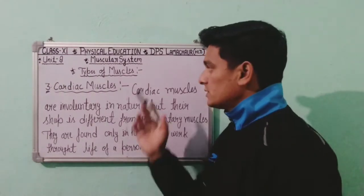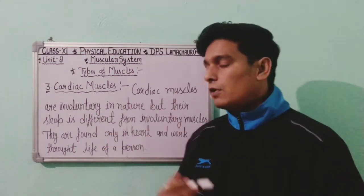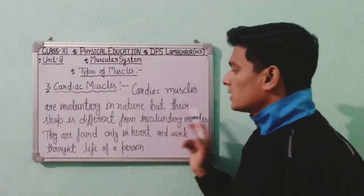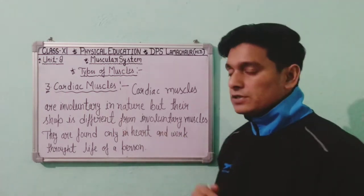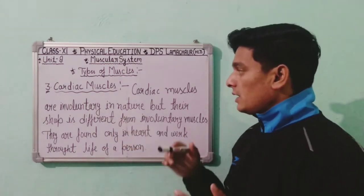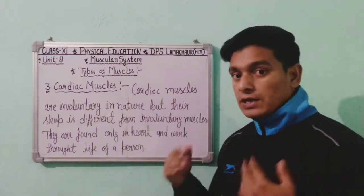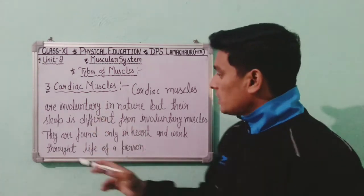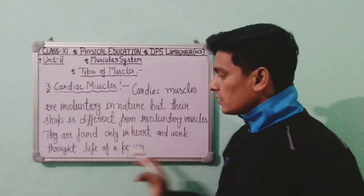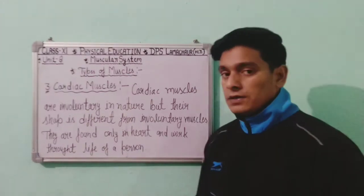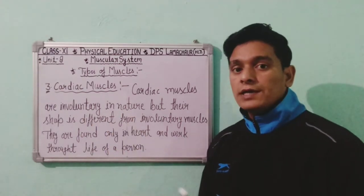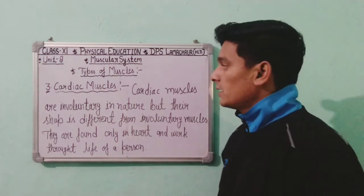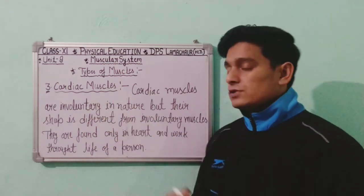The third and last type of muscle is cardiac muscle. Cardiac muscles are involuntary in nature but their shape is different from smooth involuntary muscles. They are found only in the heart and work throughout the entire life of a person — they work continuously and regularly.